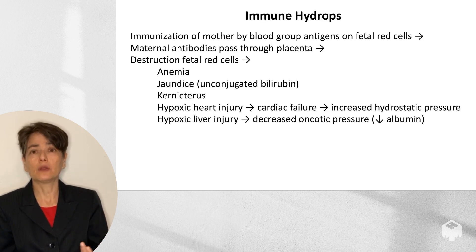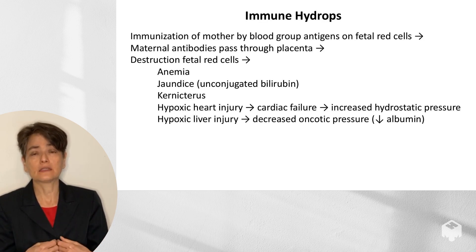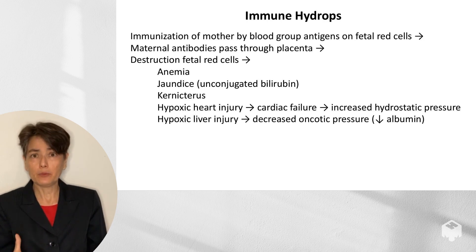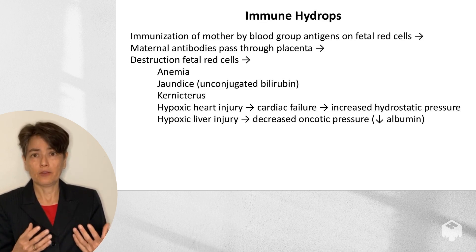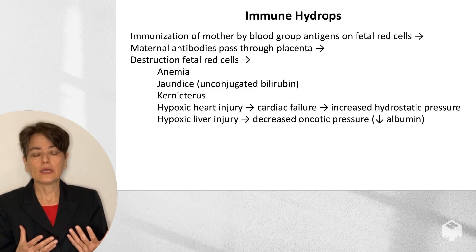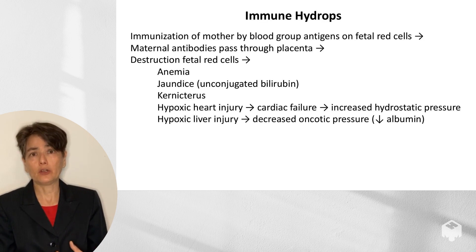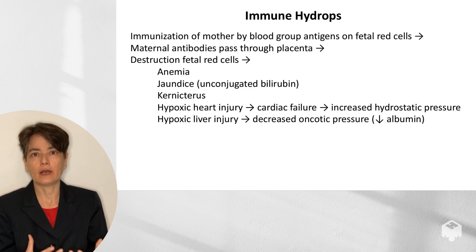In subsequent pregnancies, IgG is small enough to pass through the placenta. It will destroy the fetal red cells, leading to anemia, and cause jaundice because as those red cells lyse, they release bilirubin into the circulation. Bilirubin can accumulate in the fetal brain, leading to kernicterus, a yellow discoloration of brain tissue, which can result in intellectual disability, cerebral palsy, and vision disturbances. Hypoxic heart injury can also occur — with lysis of red cells there is insufficient oxygenation of cardiac tissue, leading to cardiac failure. Additionally, the heart may begin beating very rapidly, causing high-output cardiac failure as it tries to push residual red cells through to oxygenate the body.